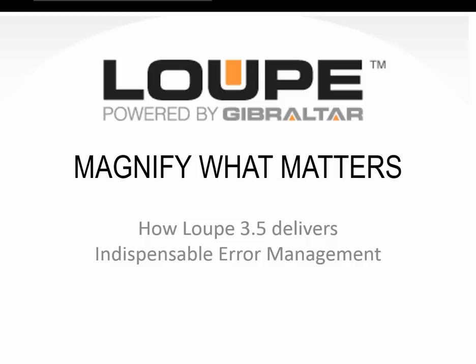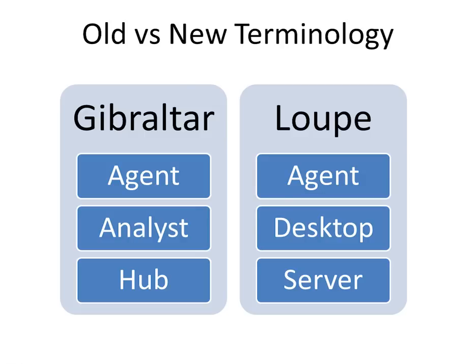For folks coming along from the Gibraltar product, let's take a look at how these two compare. The Loop product replaces the Gibraltar product. The Loop agent and Gibraltar agent are cross-compatible. Our new Loop Desktop replaces the old Gibraltar Analyst — it's a newer version of the same application. And Loop Server replaces Gibraltar Hub. In each case, we've done branding work but really upped the capabilities, which is why we went with the new name. The focus is on runtime and production error management as the core capability.